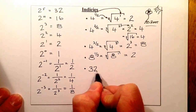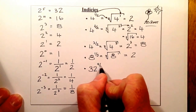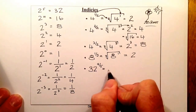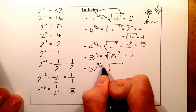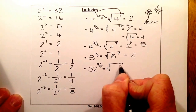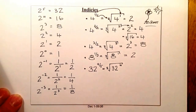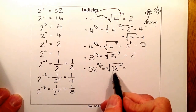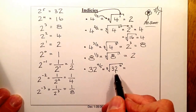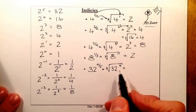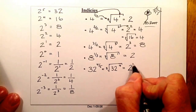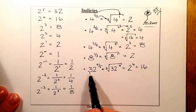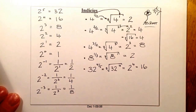Let's look at 32 to the power of 4 over 5 — a more complicated one. Converting to root form: 5 goes to the root sign, 4 goes up as the power, and 32 goes inside. The fifth root of 32 — what number times itself five times gives 32? Starting with 2: 2 to the power of 5 is 32, so the fifth root is 2. Then 2 to the power of 4 is 16. So 32 to the power of 4 over 5 equals 16.